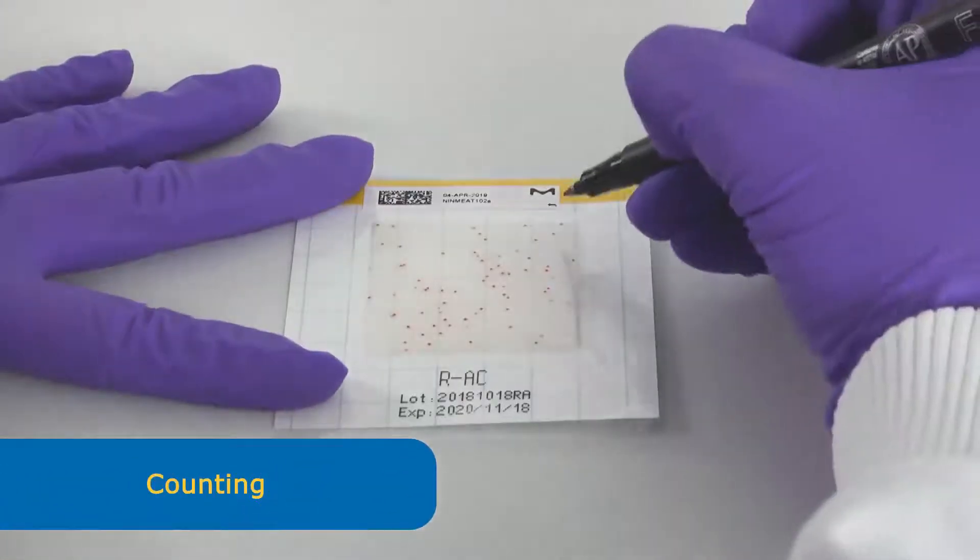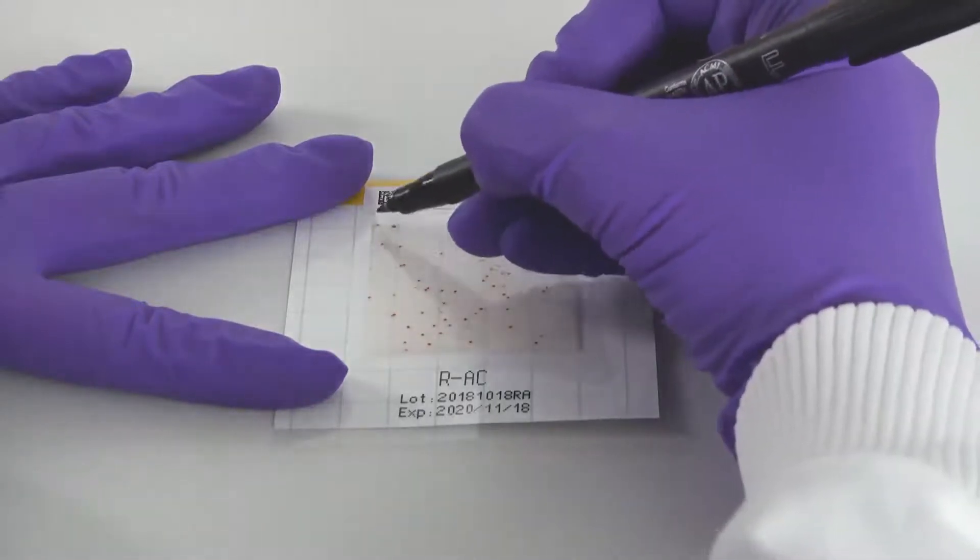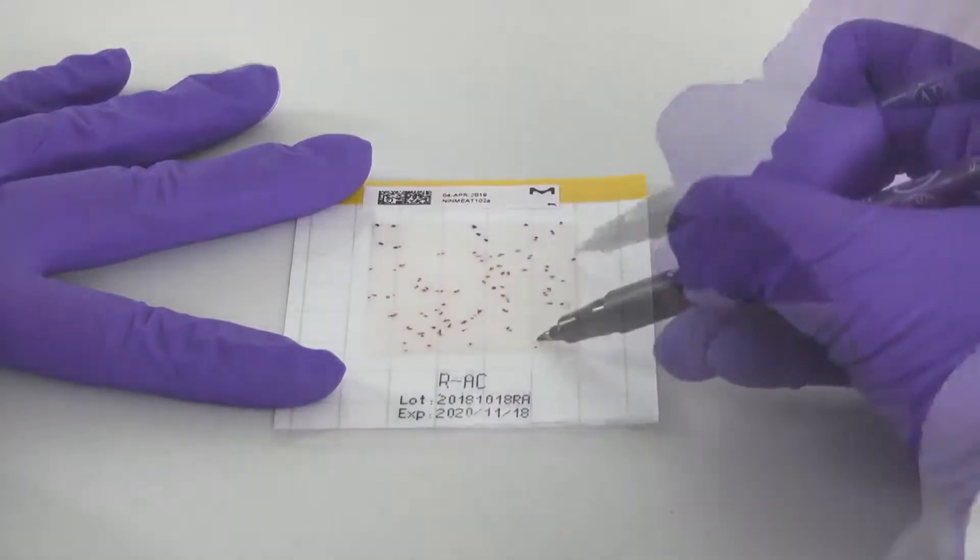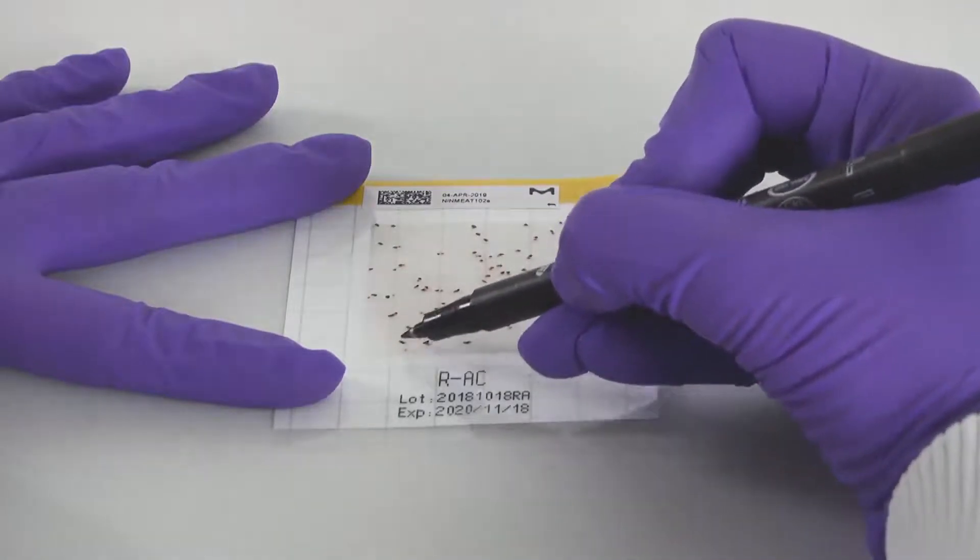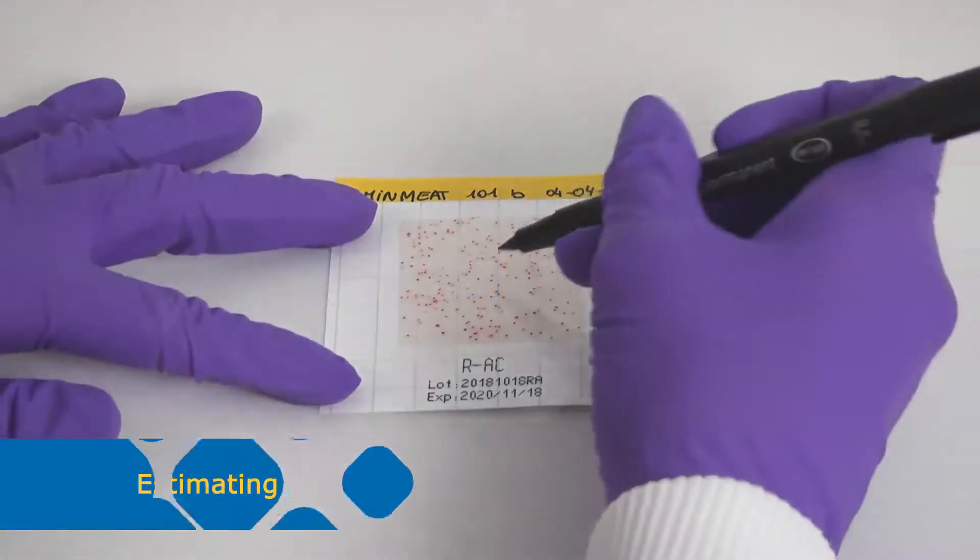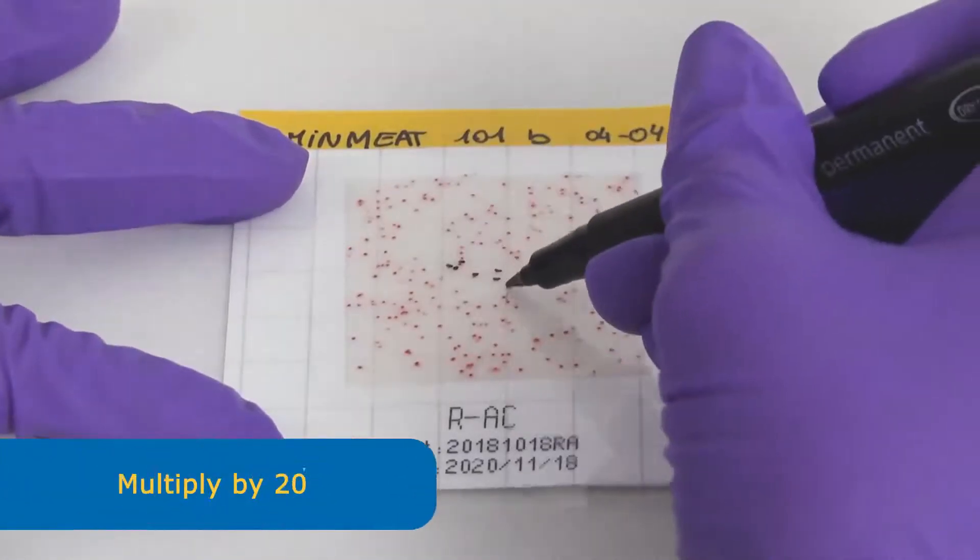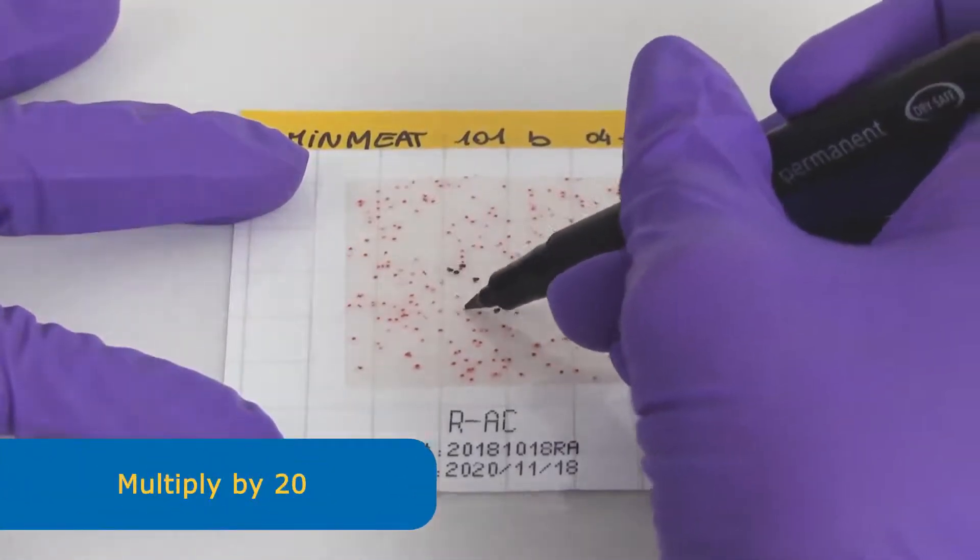For manual readout, use a pen to count all colonies in the specific color of the pad. If the large number of colonies makes it difficult to count, colony counts can be estimated by counting colonies in one grid square and multiplying by 20.